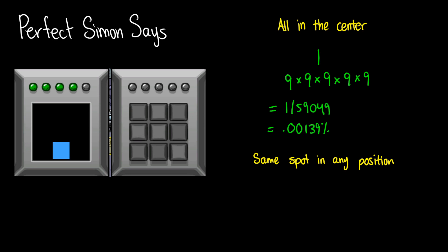But what if we don't care if it's in the center? What if we just want five buttons in a row? Well, then there's nine different possibilities for that, which means that we have a grand total of nine over 59,049 different possibilities. This means that roughly one in every 6,561 attempts at Simon Says, you will get all five buttons in a row regardless of their position. And this is roughly a whopping 0.01524% chance of that happening.